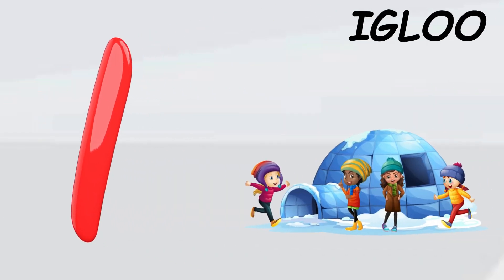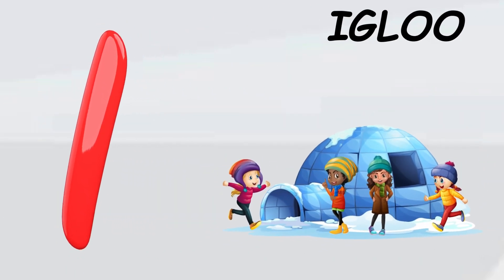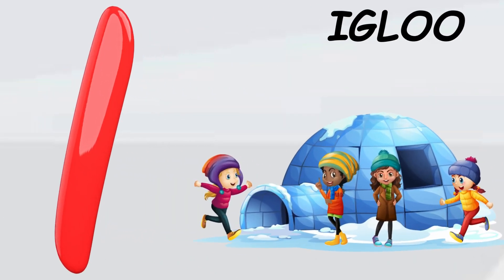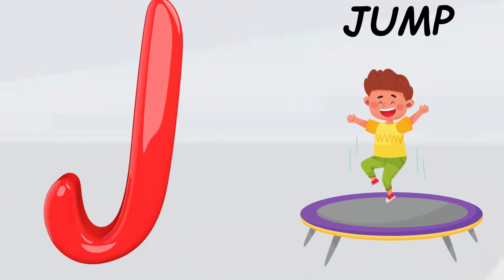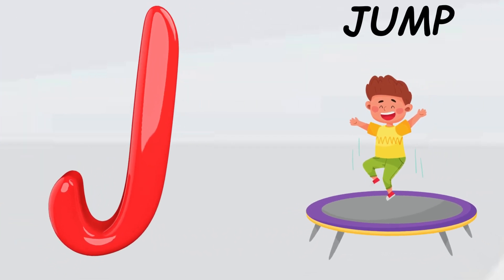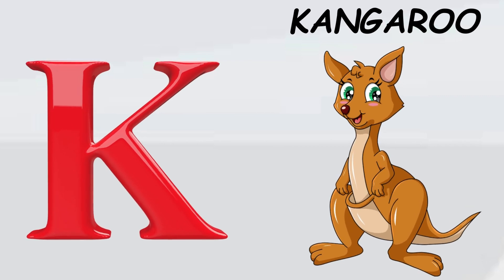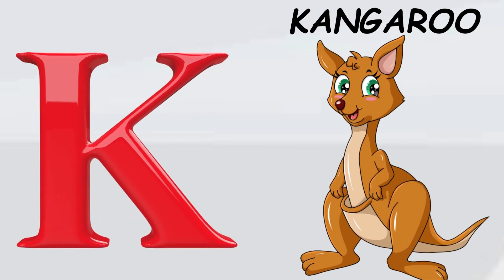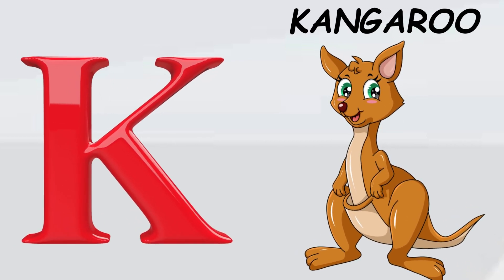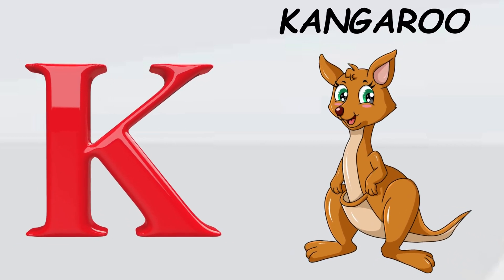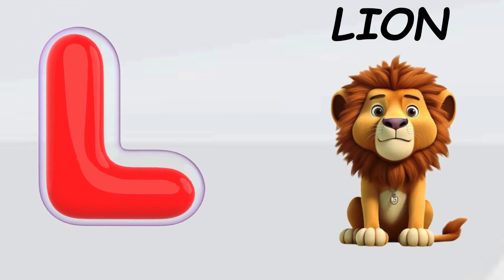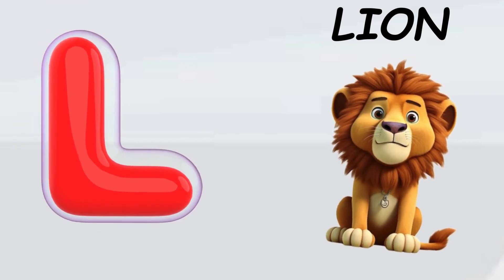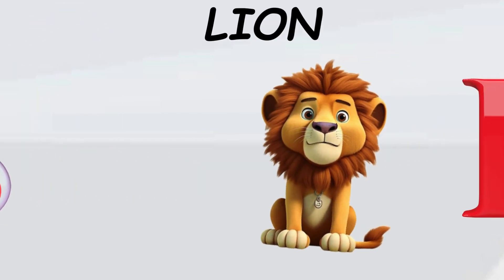I is for igloo, i-i-igloo. J is for jump, j-j-jump. K is for kangaroo, k-k-kangaroo. L is for lion, l-l-lion.